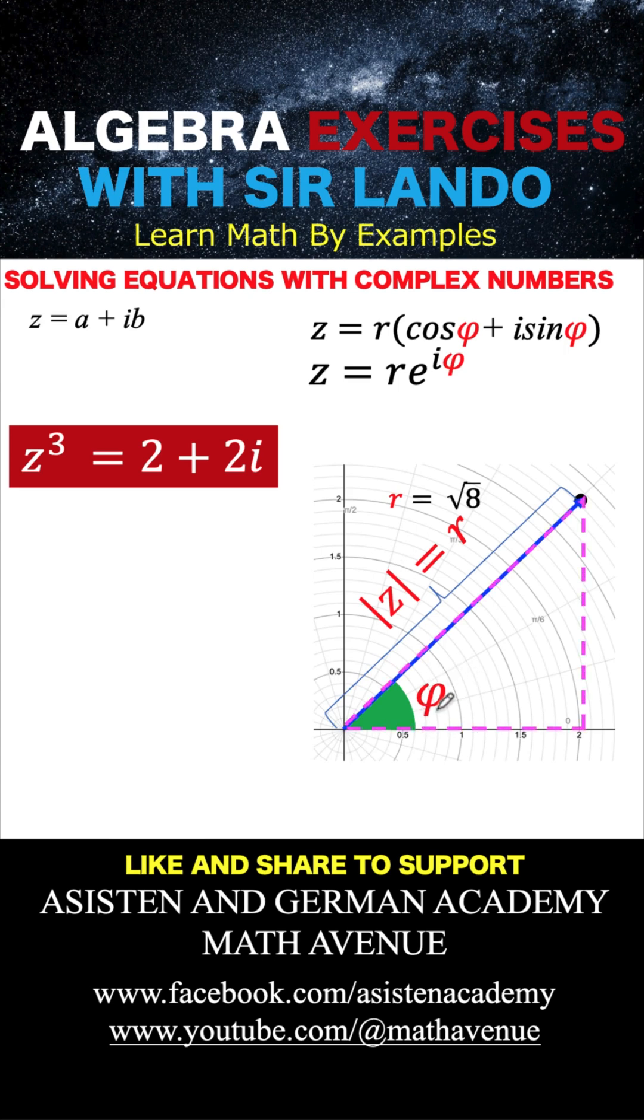But let us recall that we have here an isosceles right triangle. The length of this base is 2 units and the length of the height is also 2 units. And so, for an isosceles right triangle, this angle phi here must be 45 degrees or pi over 4.